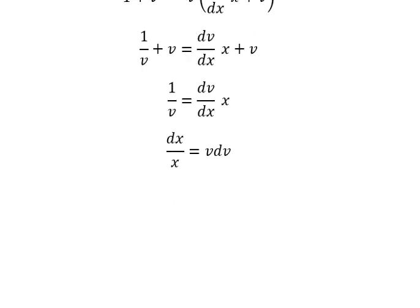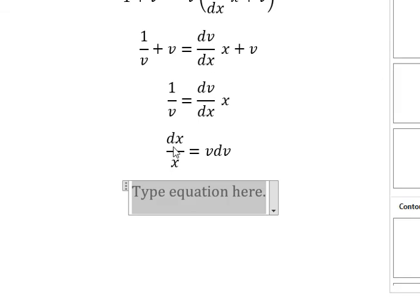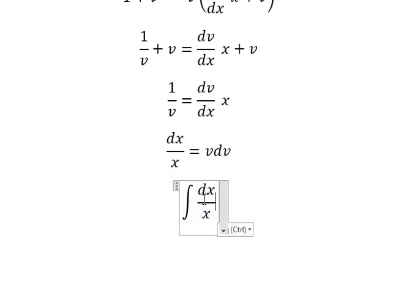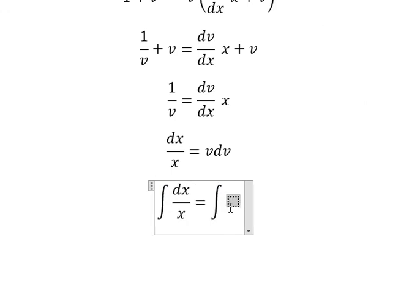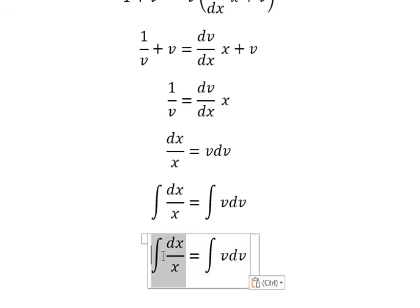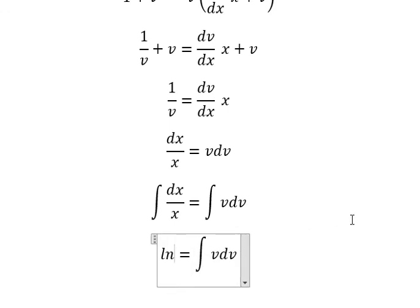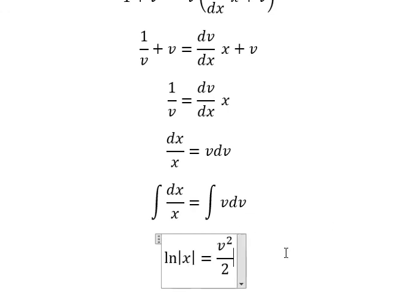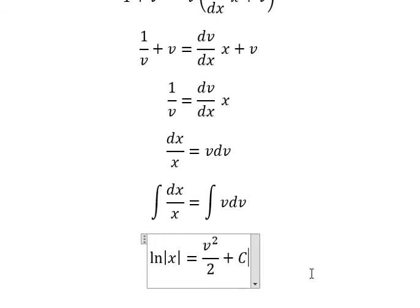Next, we integrate both sides. The integration of this one gives ln of the absolute value of x. This one gives v²/2, and we add the constant C.